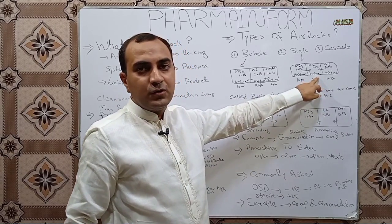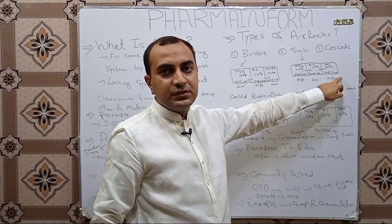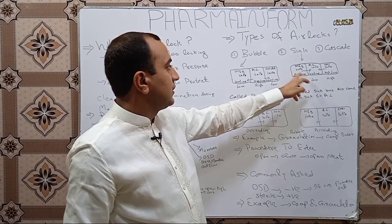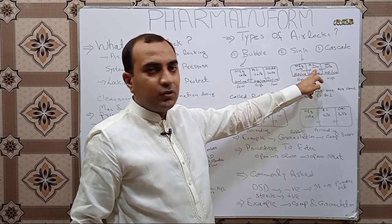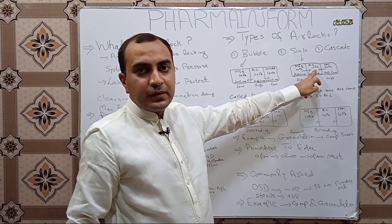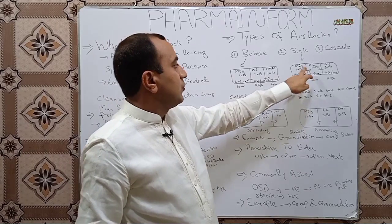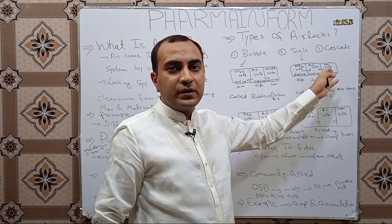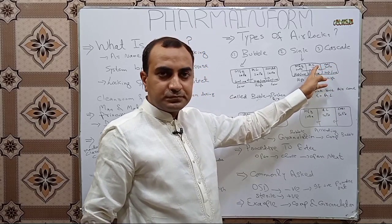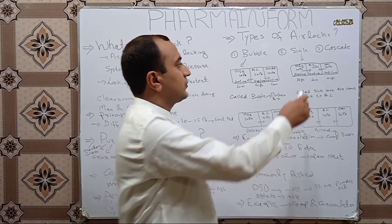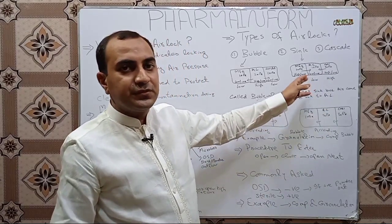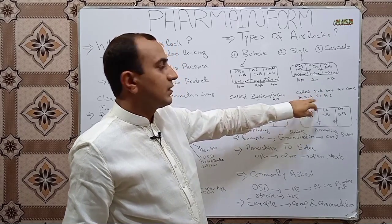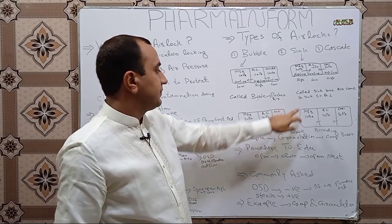In a sink airlock, we have low pressure in the airlock and higher pressure in both the manufacturing area and the corridor. Air from the manufacturing area comes into the airlock, and air from the corridor also comes into the airlock. So when we open either door, air always flows into the airlock from both sides, preventing cross contamination between the manufacturing area and the corridor. This system is known as the sink airlock.